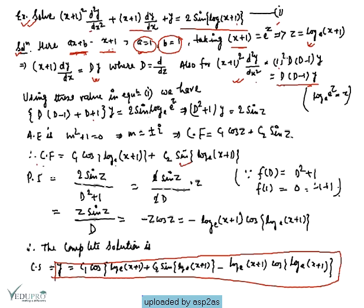The particular integral is 2sinz / (D² + 1). Here, log(x+1) = z, so f(x) = 2sinz. Substituting D² = −1 makes the denominator zero, so we must apply the failure case.